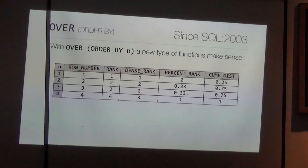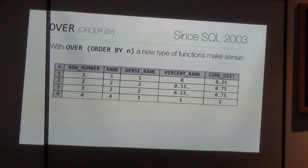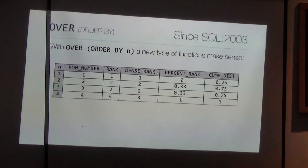Once we have an ORDER BY inside the OVER clause, we can also use other functions. Finally SQL has a function to count row numbers: ROW_NUMBER(). You can now number rows in an SQL-conformant way. There are also RANK and DENSE_RANK. The difference: if two rows have the same value they get the same rank. With DENSE_RANK there are no gaps — one, two, two, three. With RANK there are gaps, so the rank equals the row number in the following row.